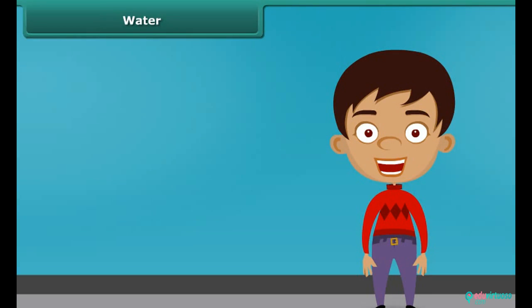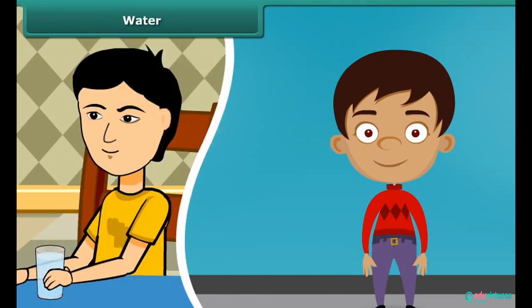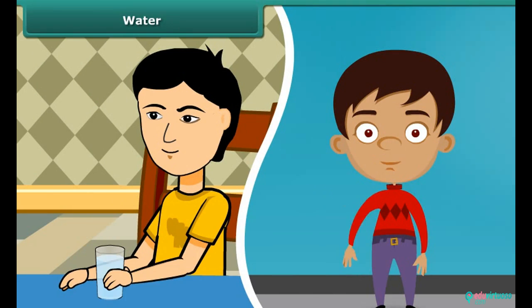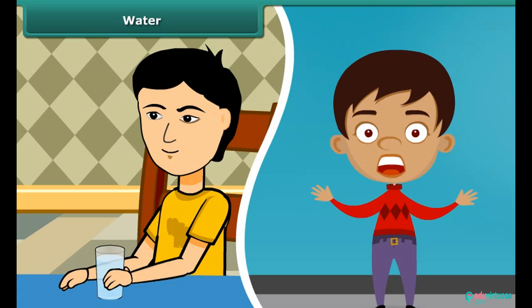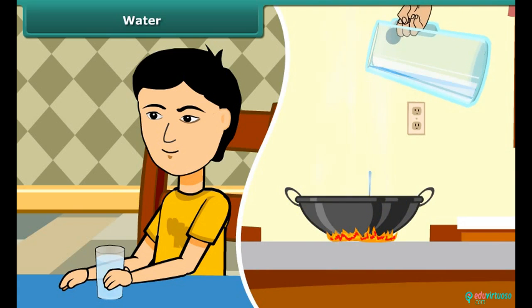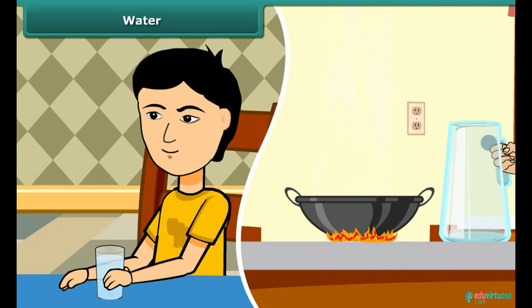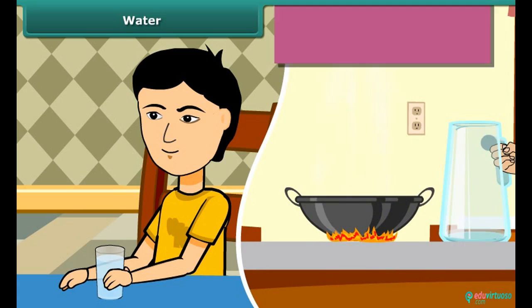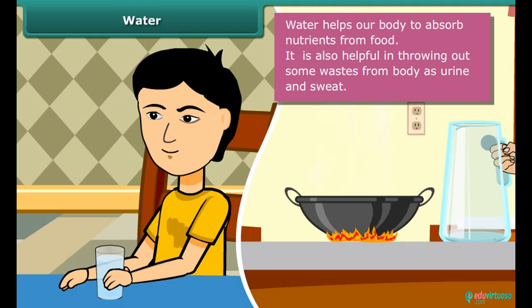Water is also an important constituent of our food. A body gets most of the water in the form of liquid. We also add water while cooking food. Water helps our body to absorb nutrients from food. It is also helpful in throwing out some wastes from the body as urine and sweat.